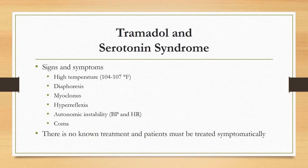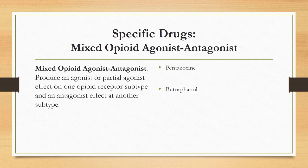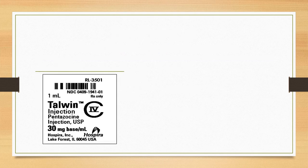Mixed agonist-antagonist drugs produce a primary opioid effect using competitive antagonist properties on the mu opioid receptor and agonist properties at the kappa receptor. Their benefit is a low addiction potential and ability to provide mild to moderate pain relief. Three drugs will be presented: pentazocine, butorphanol, and buprenorphine.